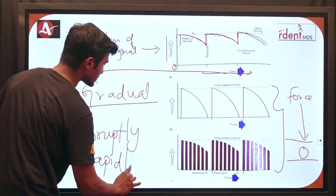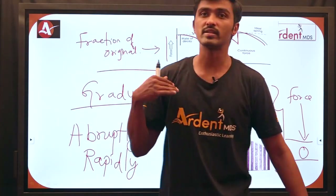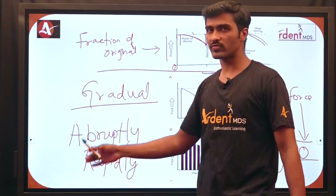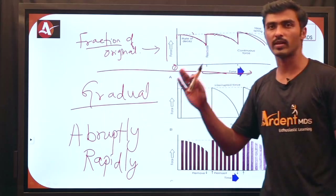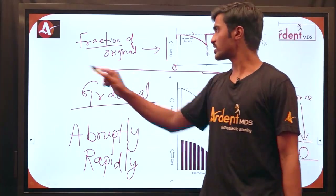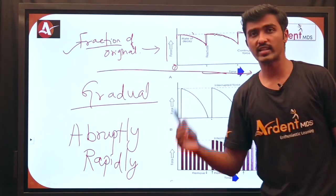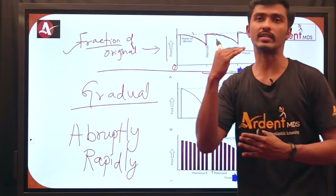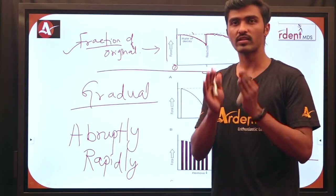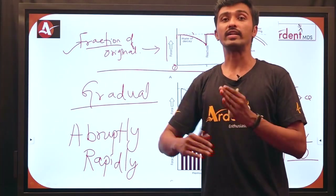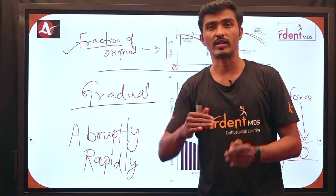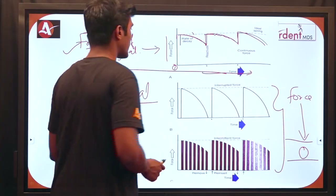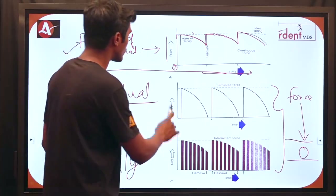For intermittent force, the force level also drops to zero, but abruptly or rapidly. That is the main difference between interrupted and intermittent force. Quick recap: continuous force — a fraction of the original force remains between appointments; interrupted — force drops to zero gradually; intermittent — force drops to zero abruptly or rapidly.